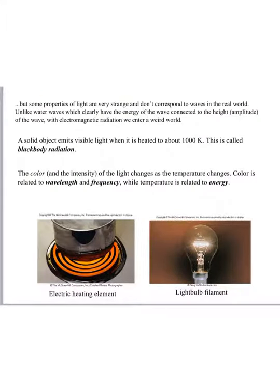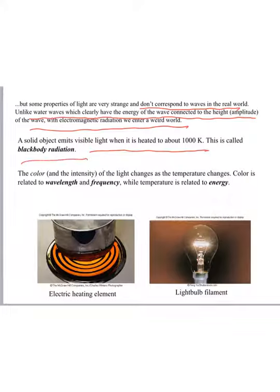So the reason that this slide is important is because it shows you two different examples of the process of diffraction. You could see it in a physical example that you can see, like water, or you could see it in an invisible kind of light. Both of these are something that behaves as a wave. In the history of this kind of science, there was a very strange phenomenon that seemed strange when people tried to understand it. So they don't correspond to waves in the real world. Unlike water waves, which clearly have the energy of the wave connected to the amplitude, with electromagnetic radiation we enter a weird world. A solid object emits visible light when it's heated. This is called black body radiation. So you could see this electric heating element or an old-fashioned light bulb. Both of these things are very hot and they put out light.